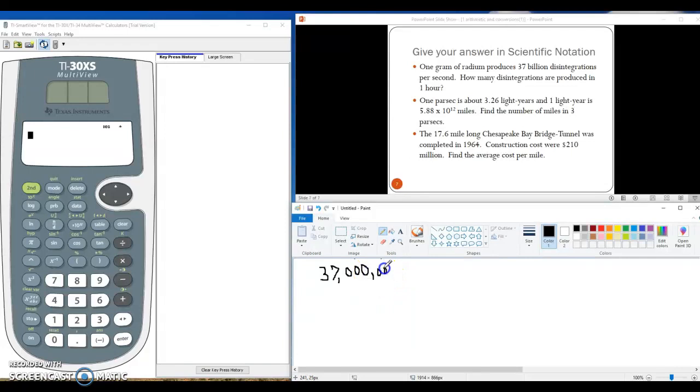Need some more. If I add three more zeros, that would be 37 million. Add three more zeros, that would be 37 billion.